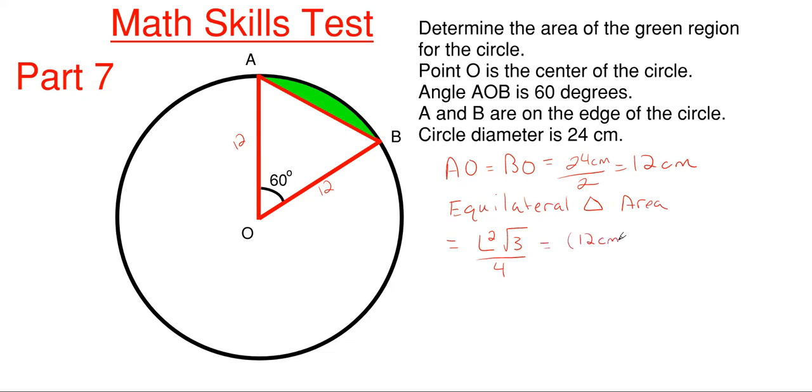12 centimeters squared times the square root of 3 all over 4 gives me 62.35 centimeters squared once we round it off.